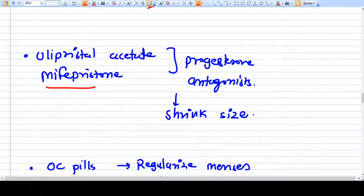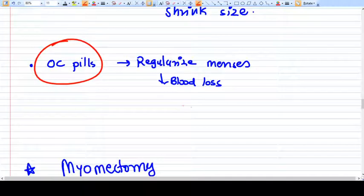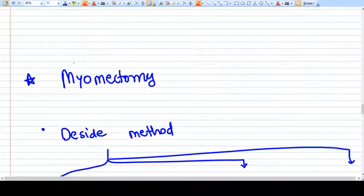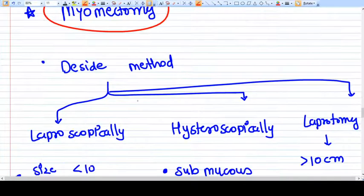Ulipristal acetate, mifepristone they will antagonize the progesterone and shrink the size. Again OC pills, they regularize the blood loss, menses and decrease the blood loss. Now once you decide the myomectomy is there, then you need to decide which kind of method we should use, either we should use the laparoscopy, hysteroscopy, or laparotomy.